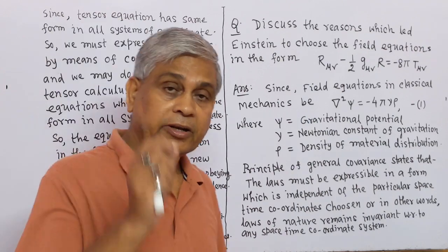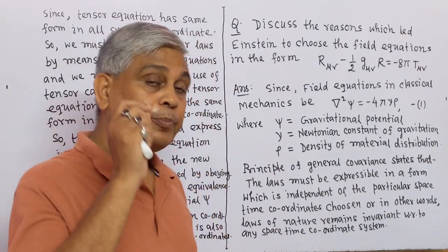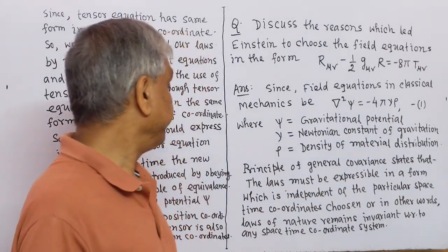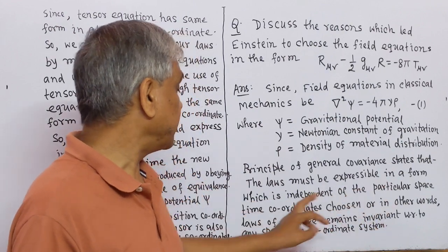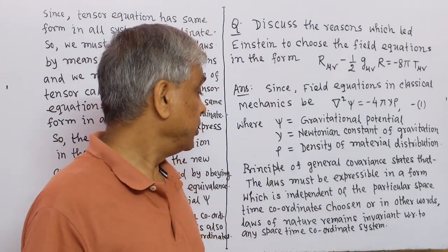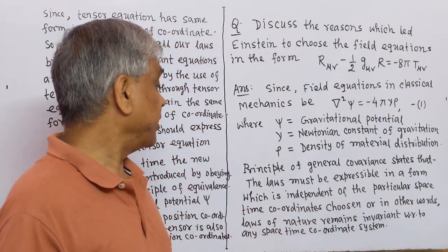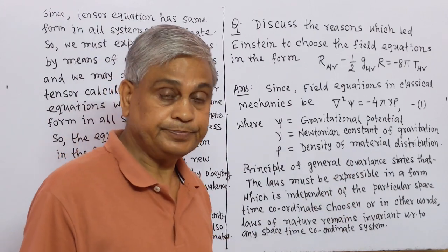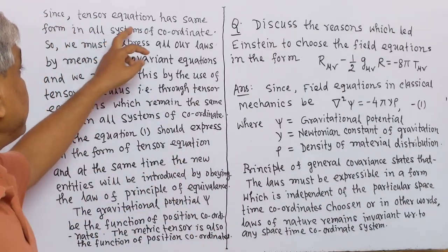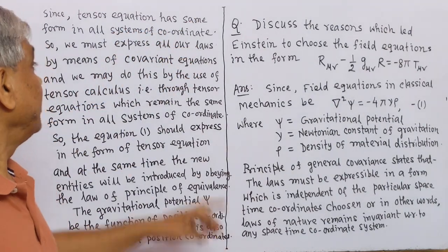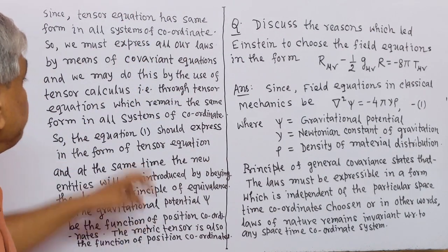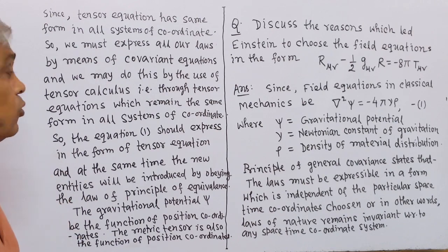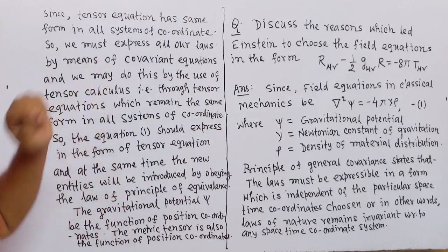We have to find the reason why equation one from classical mechanics is changed to Einstein's equation. The principle of general covariance states that the laws must be expressible in a form which is independent of the particular space-time coordinates chosen. In other words, the laws of nature remain invariant with respect to any space-time coordinate system. Since tensor equations have the same form in all coordinate systems, we must express all our laws by means of covariant equations, using tensor calculus.